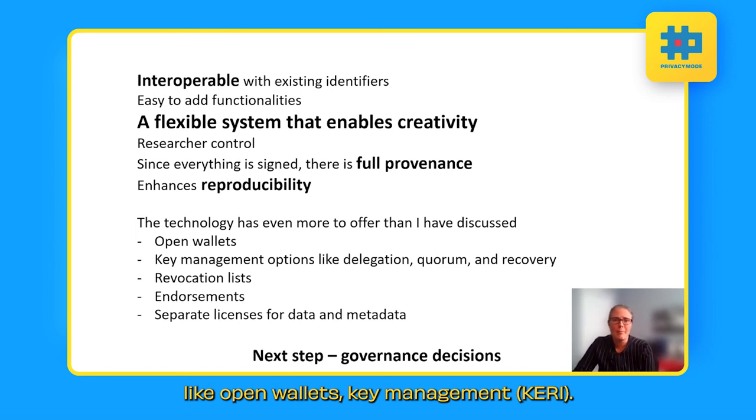Like open wallets, key management, KERI for those in the know, revocation lists, endorsements, licenses and so on. But the next step after all of the discussion here would be to start making governance decisions about all the different parts that are possible, how to put them together in order to make an ecosystem of research identifiers.